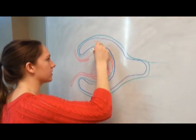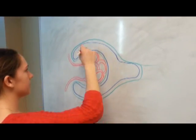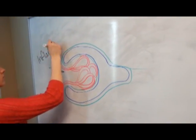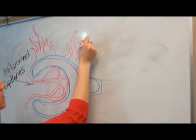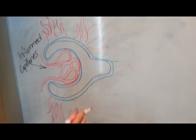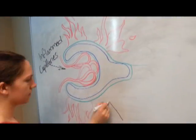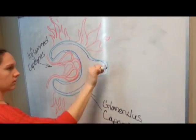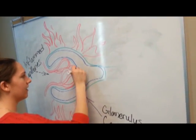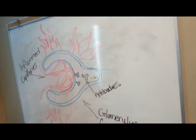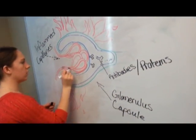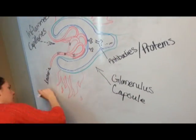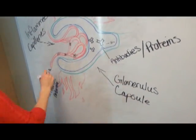Acute glomerulonephritis is caused by an infection that alters the host immunoglobulin. Immunoglobulin is a large Y-shaped protein that helps identify foreign objects in the body, such as bacteria and viruses. Infected immunoglobulin combines with antibodies to form complexes, which collect in the glomerular capsule. An accumulation of immunoglobulin-antibody complexes damages the basement membrane in the kidney. The basement membrane is responsible for filtration in the glomerular capsule.